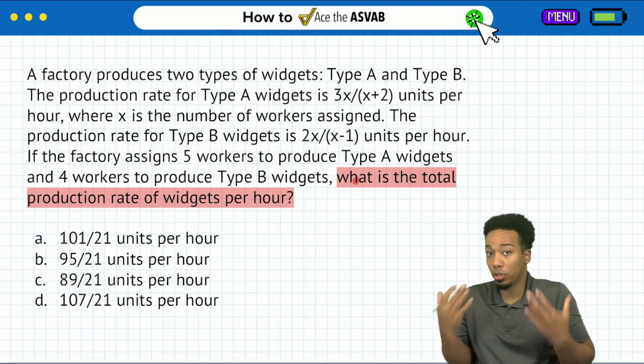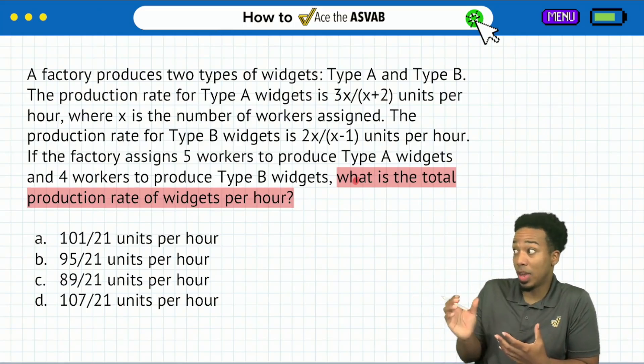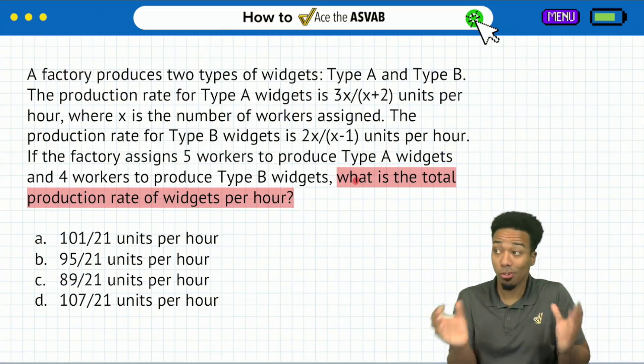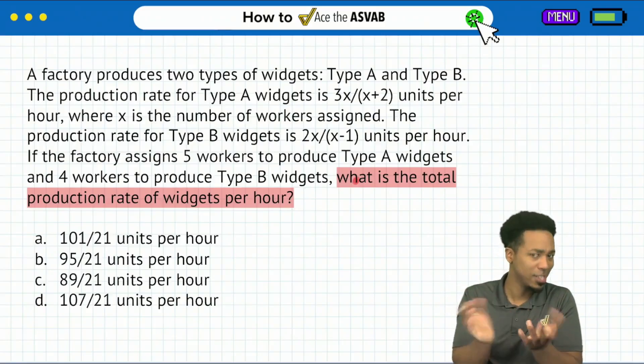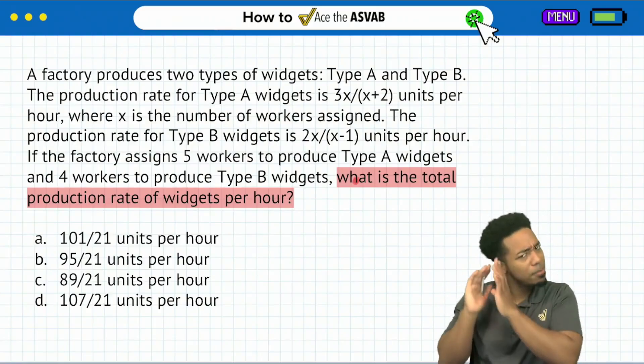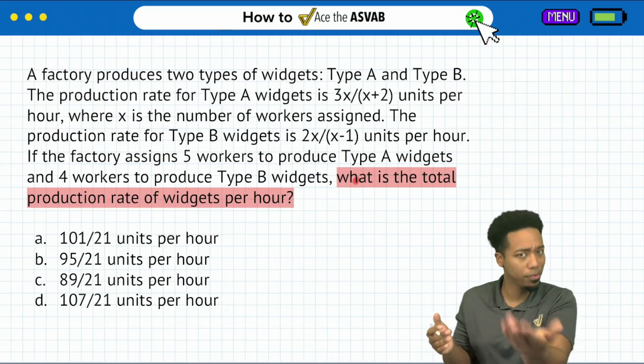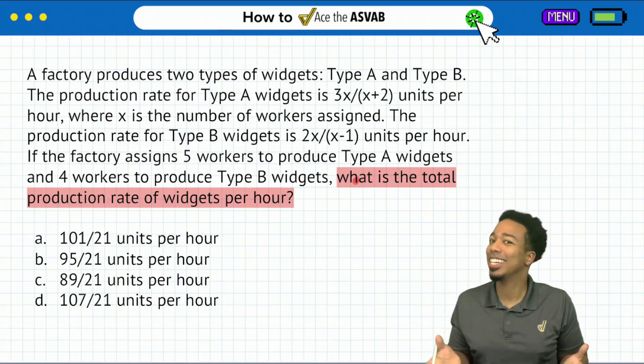Now, when I hear the word total, and I read that we have a type A widget and type B widget, total might tell me we got to add those things together, right? Cool. So just keep that in the back of your head. We'll confirm that. We'll verify it. But it kind of sounds like that's what we have to do.